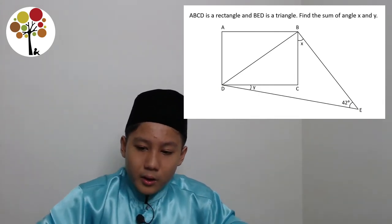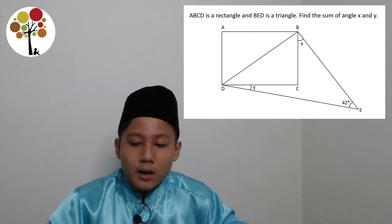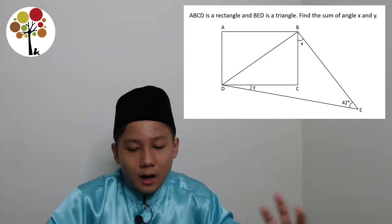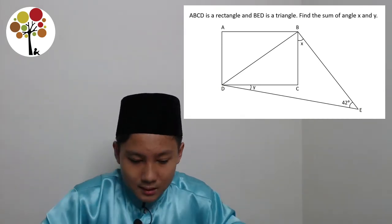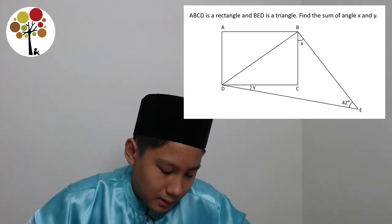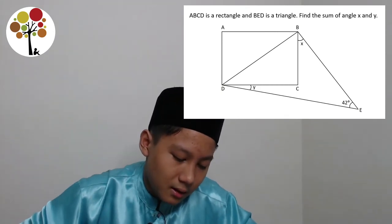Now, in the question, they say find the sum of angle x and angle y. So, we actually don't need to find one of each. So, how much x is and how much y is. And that actually makes things a lot easier. So, here we can see basically what I've just said.